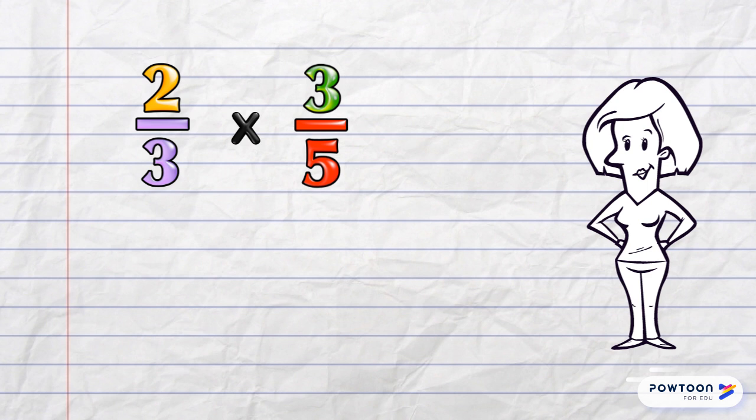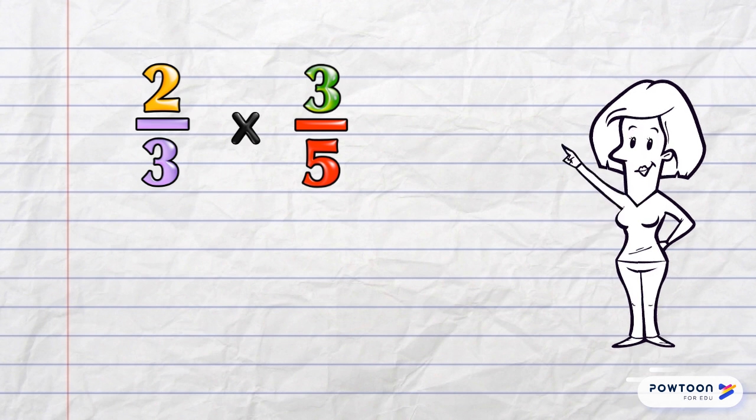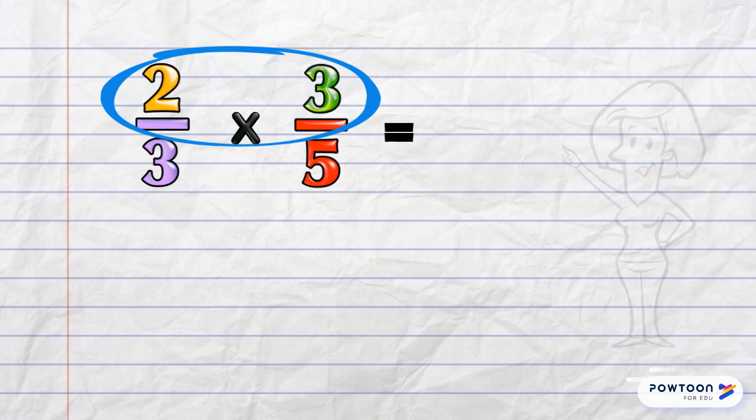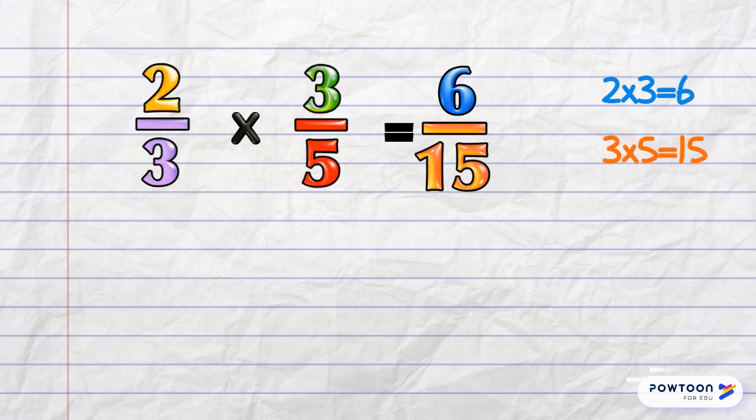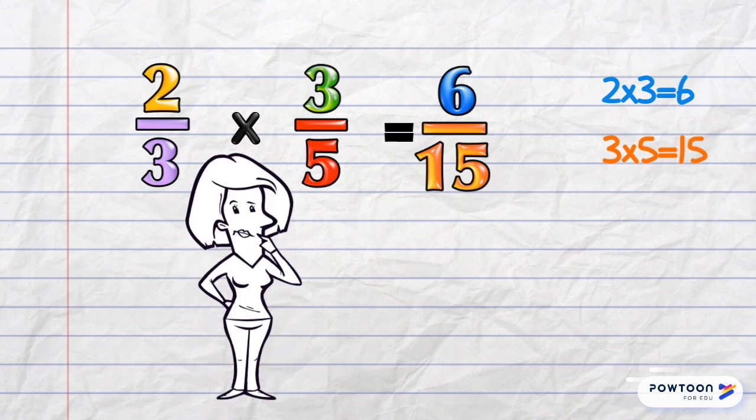We know that we can multiply the numerators together now, so top times top: 2 times 3 is 6. Then multiply the denominators together, bottom times bottom: that's 15. 6 over 15. Is that it? Nope!